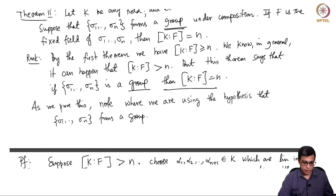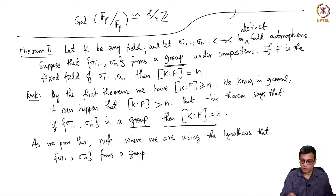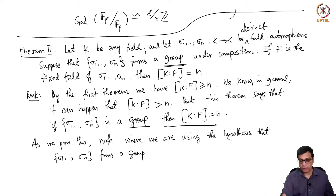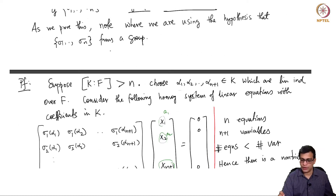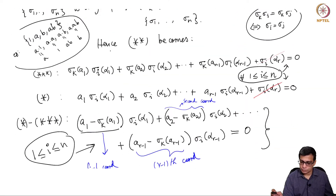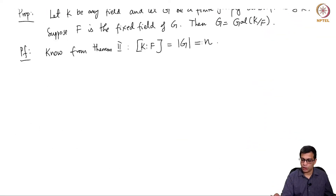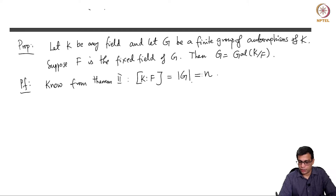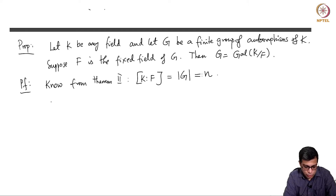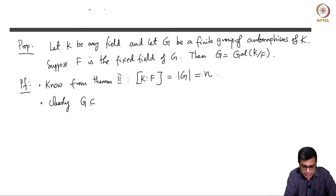Theorem 2 says: if you have a field and n distinct automorphisms forming a group, then the degree of K over the fixed field is exactly n. So I am denoting by n the cardinality of G. Now, clearly G is contained in the Galois group of K over F.